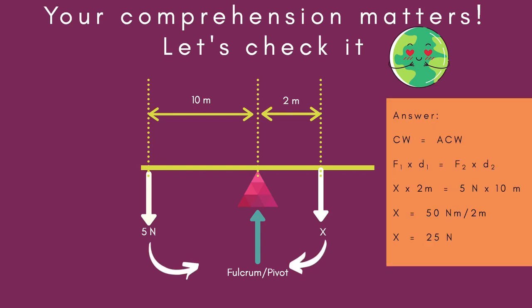Here is the answer. If clockwise moments equal to anti-clockwise moments, then you look for force 1 and distance 1 equals to force 2 times distance 2. In this case, our clockwise moments would be any moment going in a clockwise fashion or causing the lever to turn in a clockwise fashion. That would be X. Right? So that would be the force causing the lever to move in a clockwise fashion. The distance of that force is 2 meters. So here we have X times 2 meters.